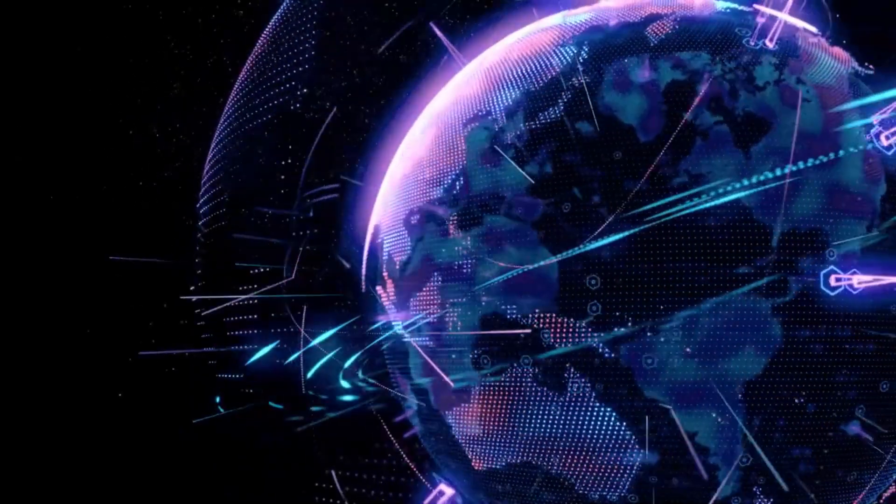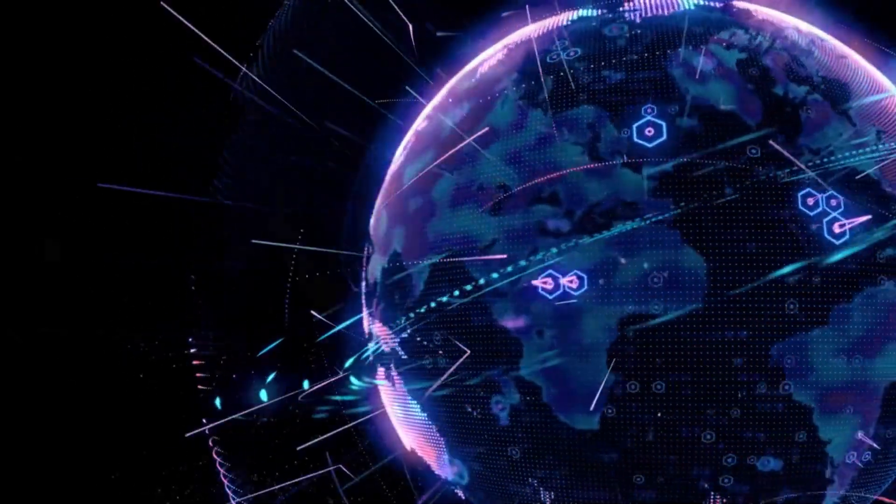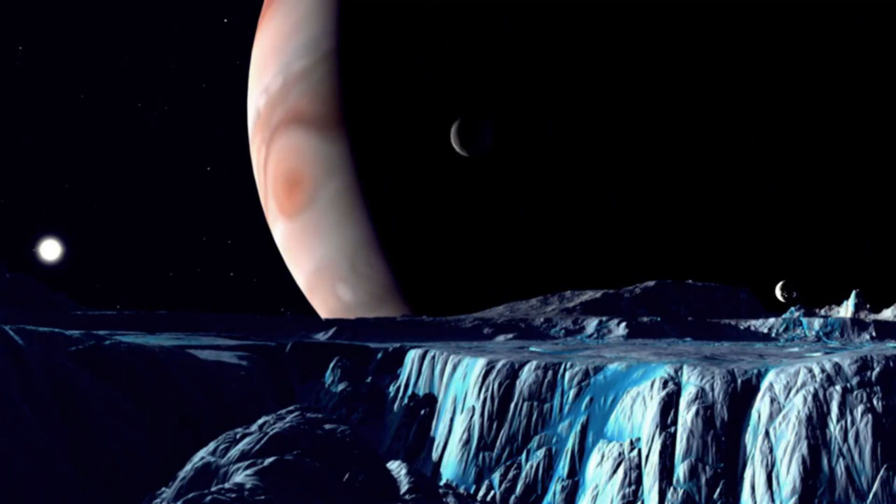The explosion would also have a significant impact on the outer planets, such as Jupiter and Saturn. These planets are massive enough to generate their own internal heat, which is why they have a significant number of moons. However, the explosion of the sun would cause these planets to lose much of their internal heat, making them much colder and less hospitable to any kind of life.